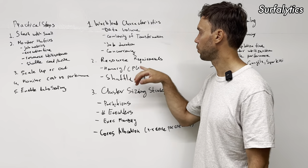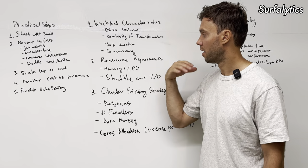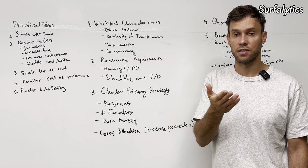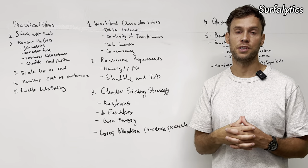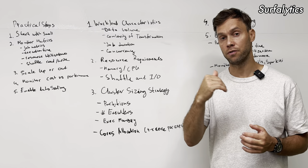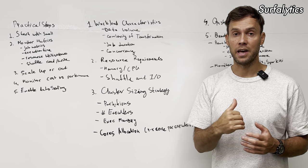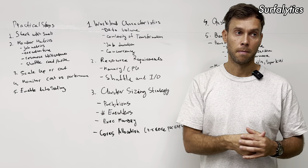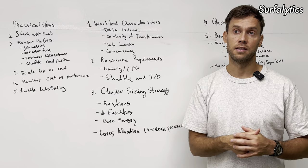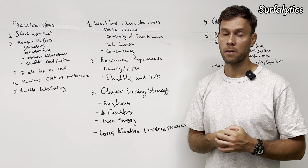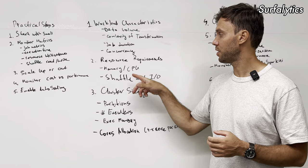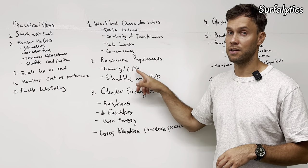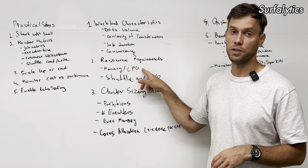The next topic is resource requirements. When we talk about the cluster, instances are just virtual machines — a distributed system with a bunch of nodes. Usually we use the same nodes for workers and ideally the same node type for the master. The key characteristics that matter are the operational memory and number of CPU cores.